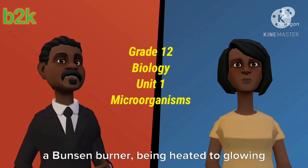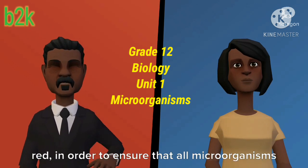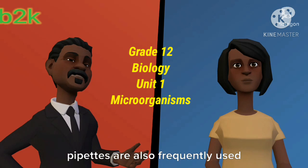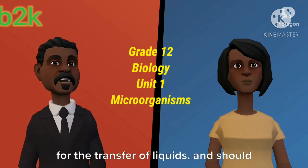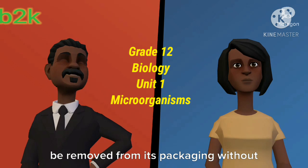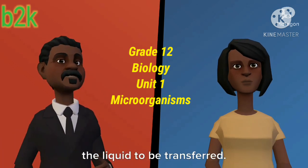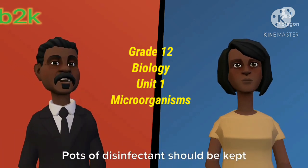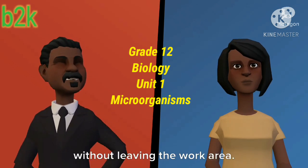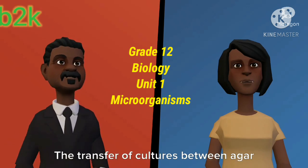Wire loops are sterilized by flaming over a Bunsen burner, being heated to glowing red in order to ensure that all microorganisms present on the loop are destroyed. Disposable pipettes are also frequently used for the transfer of liquids and should be removed from packaging without touching the tip to any surface besides the liquid to be transferred. Pots of disinfectant should be kept close by to dispose of such items without leaving the work area.